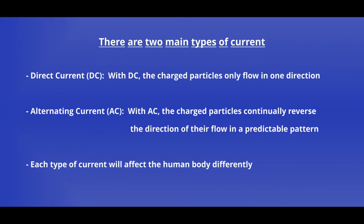With electricity, we have two main types of current: direct current or DC, and alternating current or AC. With DC, our charged particles only flow in one direction. With AC, the direction of current flow flip-flops back and forth routinely.